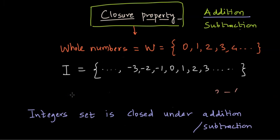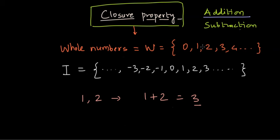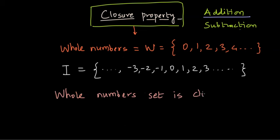What about the whole number set? Let's see whether whole numbers are closed under addition and subtraction. Select any two numbers from the whole number set, say one and two, and add them — do you get a whole number? Yes. Can you find a combination where the output falls outside whole numbers? No. So the whole number set is closed under addition, but not under subtraction.